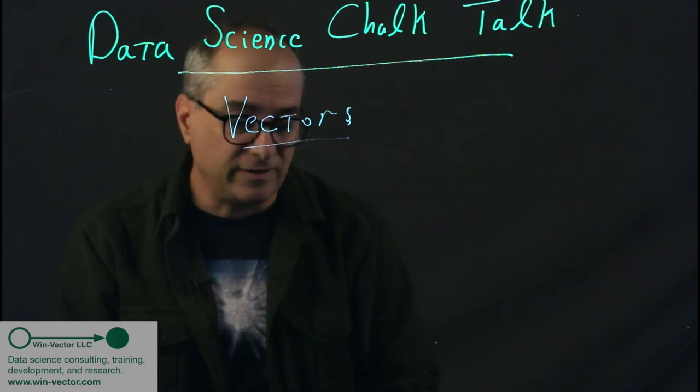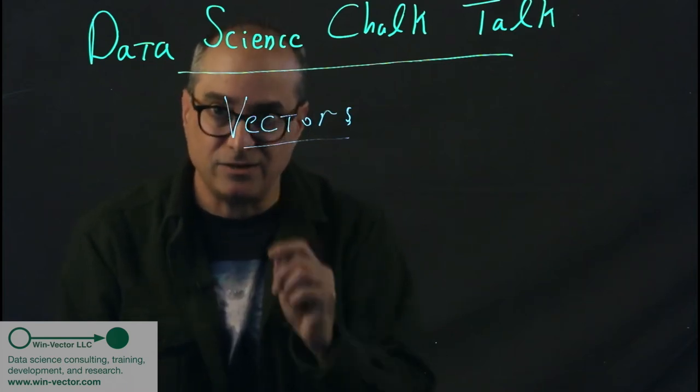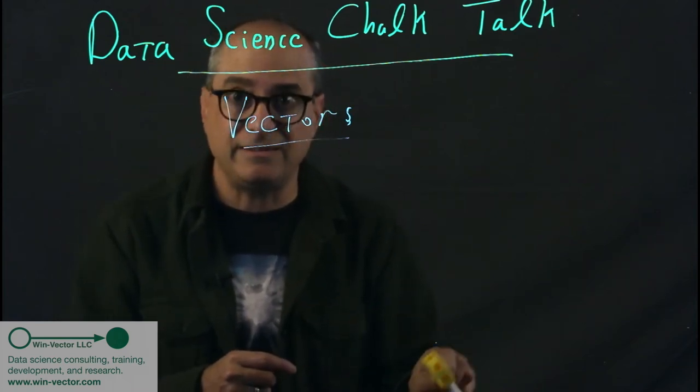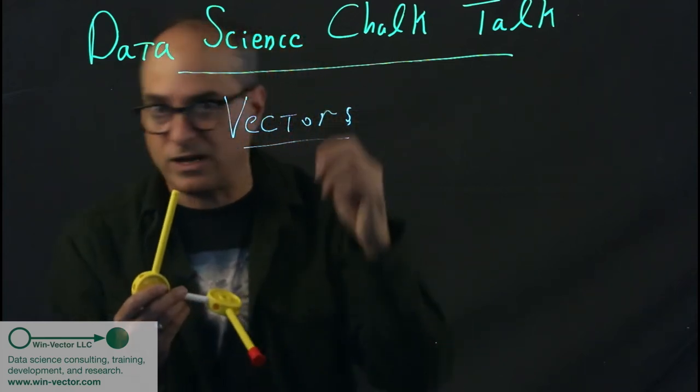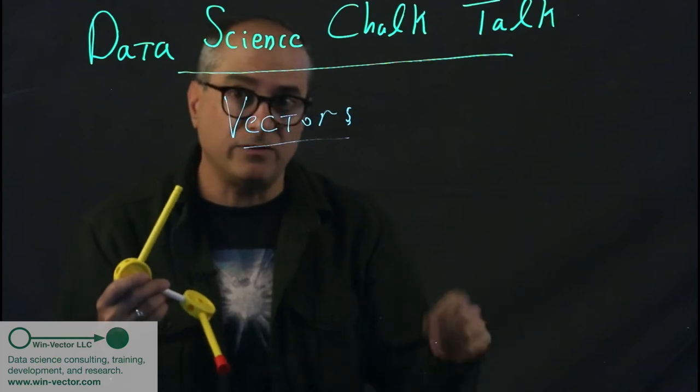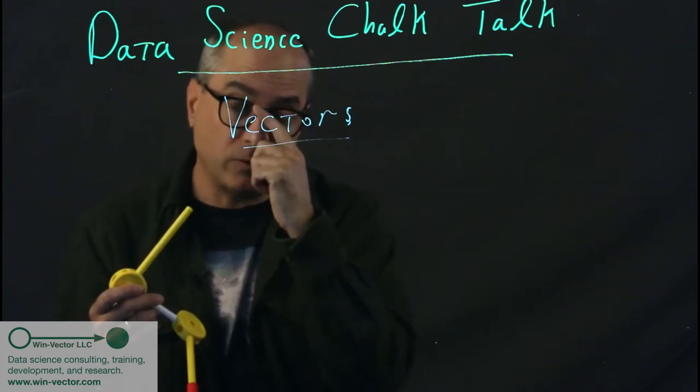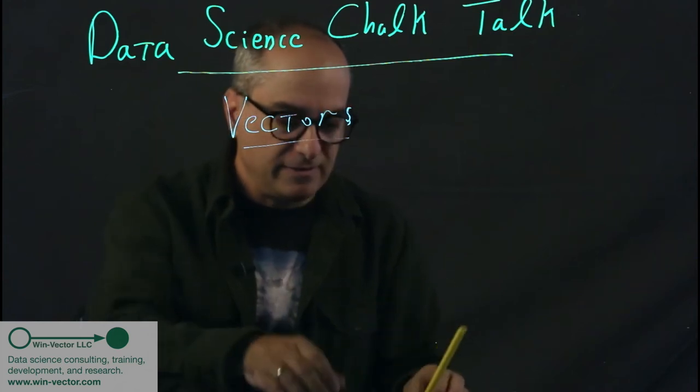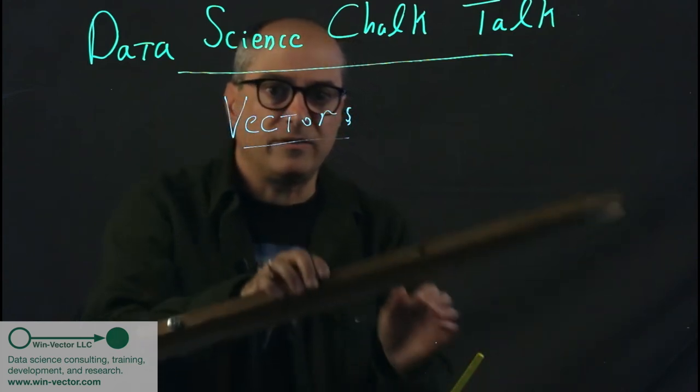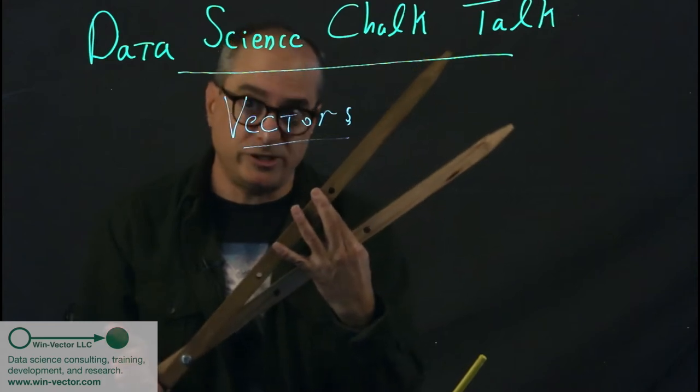However, what saves us is the relationship between any two vectors is actually quite easy to visualize. That might sound silly. You can't visualize one vector, but you can visualize two. We have to abstract and say we're only visualizing the difference.